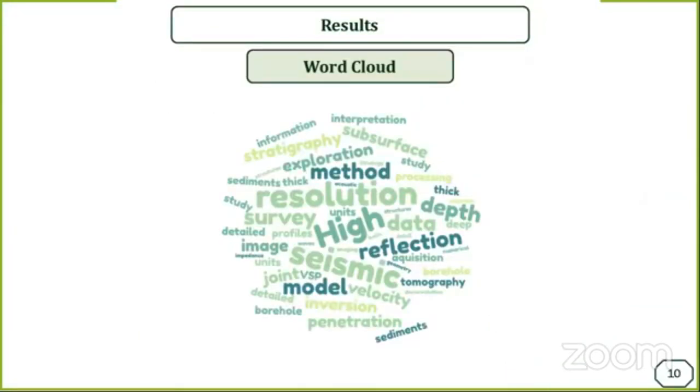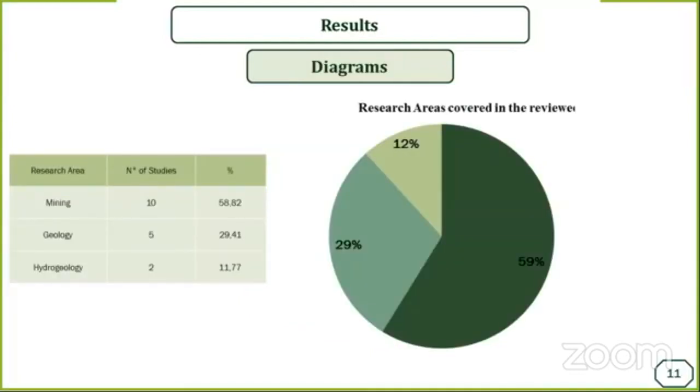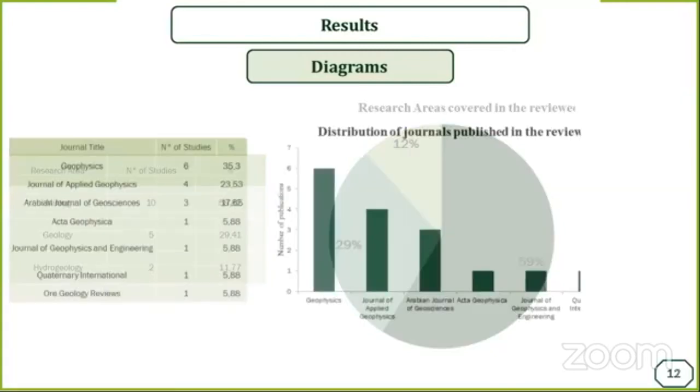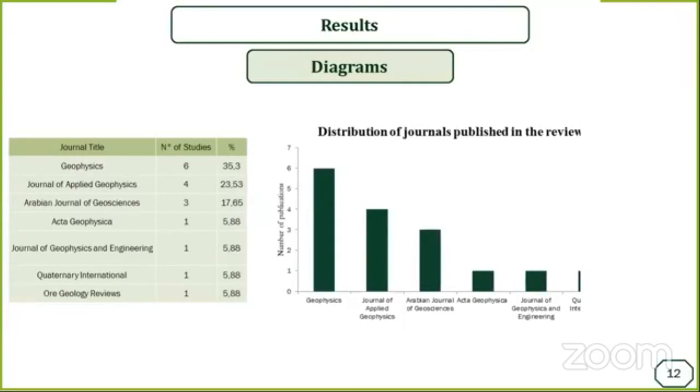Here I'm showing you some results of the systematic literature review study. The word cloud is a representation of words that give greater prominence to words that appear more frequently. It gives us an idea about new keywords we could use in searching scientific databases. Here's a diagram that shows the research areas covered in the reviewed papers, and a table shows the exact frequencies of each subject area. It shows how many studies are related to each field. We have the distribution of journals published in the reviewed papers with a table showing the exact number of studies for each journal.